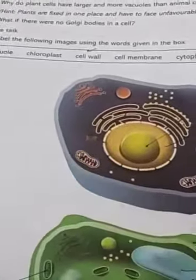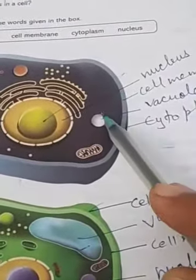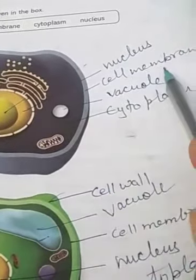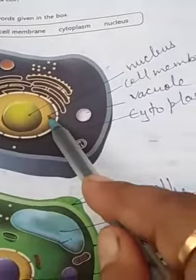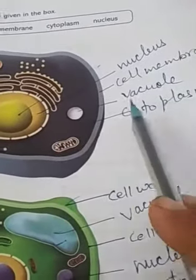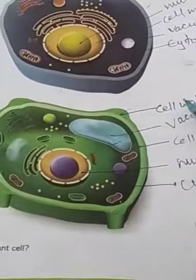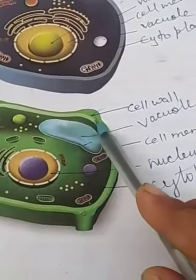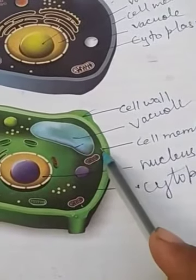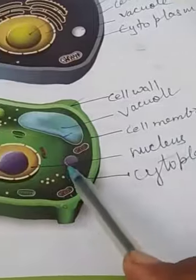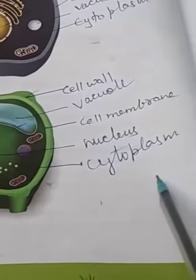For the animal cell: the outermost membrane is the cell membrane, this one is the nucleus, this is a small vacuole, and this fluid is the cytoplasm. For the plant cell: the outermost layer is the cell wall, this is a large vacuole, the inner layer is the cell membrane, this one is the nucleus, and the fluid filled inside is the cytoplasm.